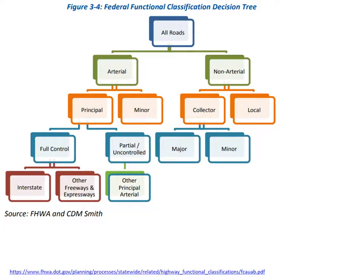The Federal Functional Classification System provides additional categories which further disaggregate roadways into specific types of arterials, collectors, and local roads. Local roads represent approximately 70 percent of the miles of roads, but carry approximately 15 percent of travel volume.